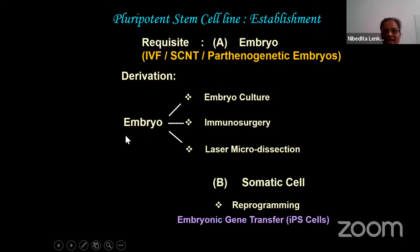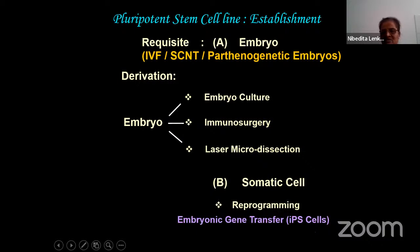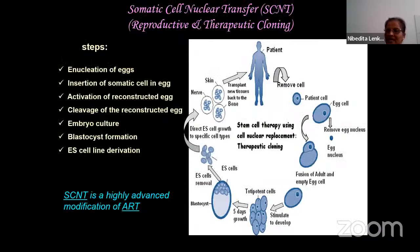From the embryo, you can either do direct embryo culture, immunosurgery, or laser microdissection to dissect out the ICM. Through reprogramming, you can also generate induced pluripotent stem cells. Through SCNT, you can get the blastocyst-phase embryo, extract the ICM, and get embryonic stem cells. In somatic cell nuclear transfer, as the name suggests, you take any somatic cell and perform nuclear transfer to maintain the identity of the donor.